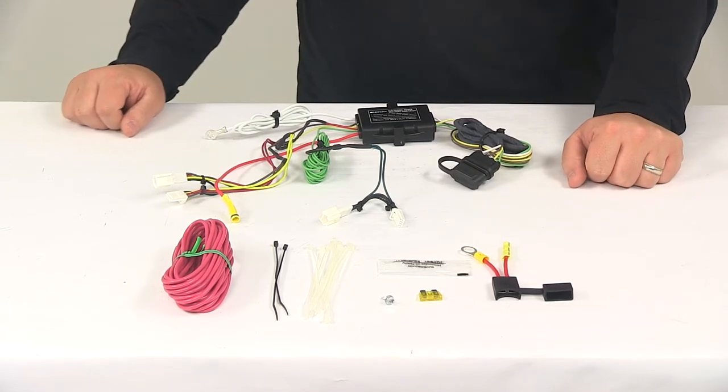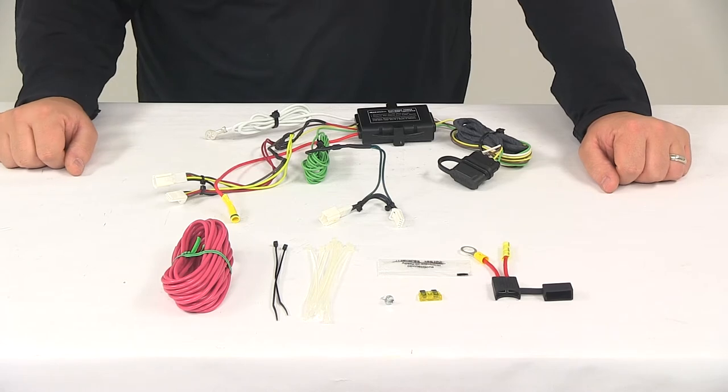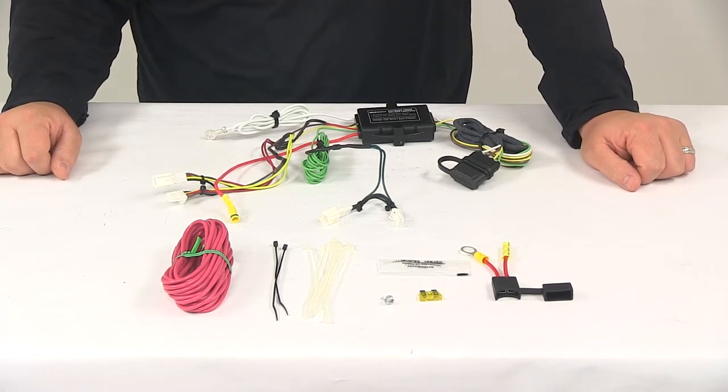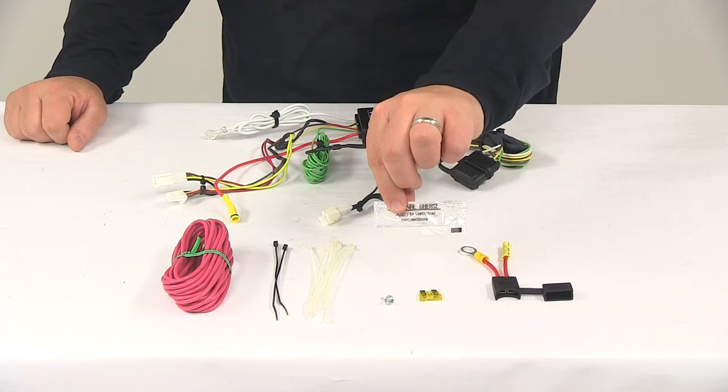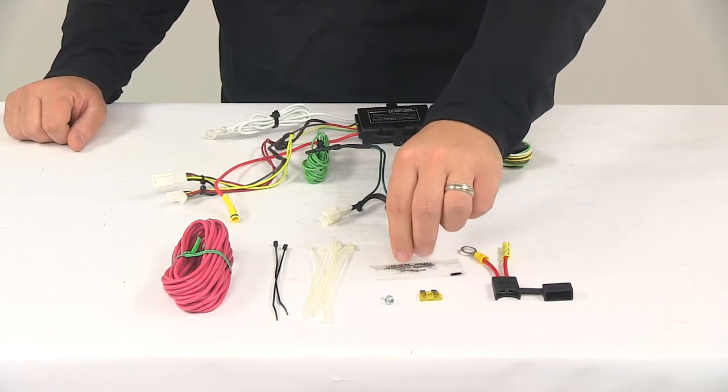It is recommended that you use a small amount of terminal grease on all your electrical connections like the plugs on the vehicle and the four-pole connector itself. The grease is designed to help prevent corrosion to the terminals and it is included with the kit.